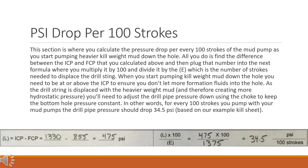PSI drop per 100 strokes. This section is where you calculate the pressure drop per every 100 strokes of the mud pump as you start pumping heavier kill weight mud down the hole. You find the difference between the ICP and FCP calculated above, then multiply it by 100 and divide it by E, which is the number of strokes needed to displace the drill string. When pumping kill weight mud, you need to be at or above the ICP to ensure you don't let more formation fluids into the hole. As the drill string is displaced with heavier weight mud, you'll need to adjust the drill pipe pressure down using the choke to keep bottom hole pressure constant — so for every 100 strokes, the drill pipe pressure should drop 34.5 psi based on our example.